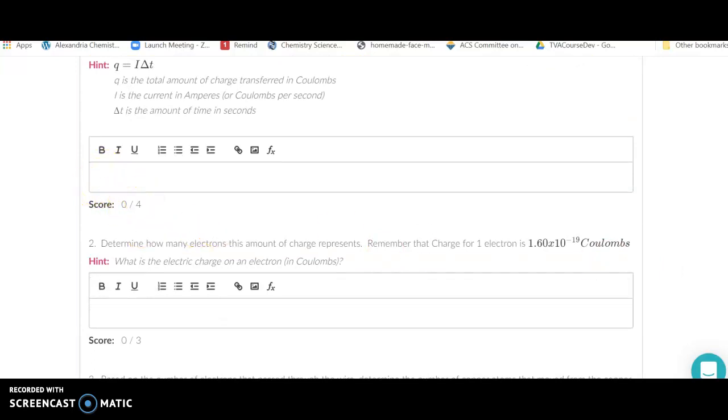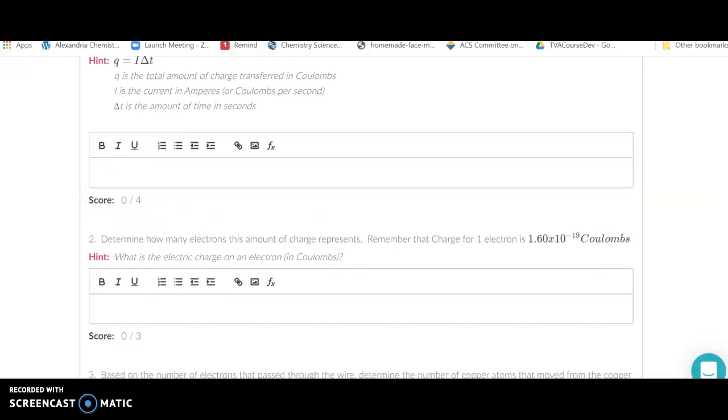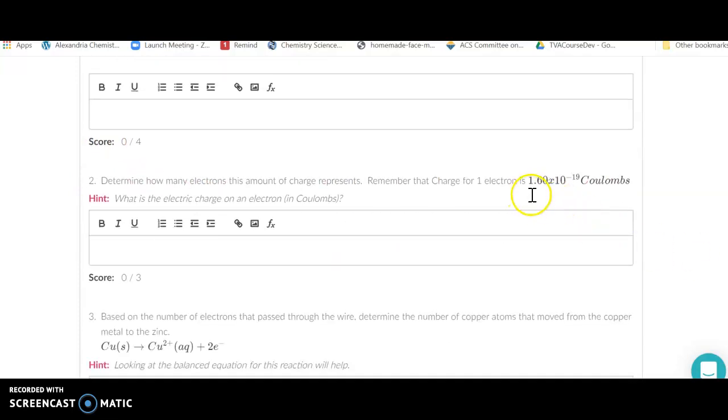Now we want to figure out how many electrons that involved. The charge for electrons is 1.60 times 10 to the minus 19 coulombs for every electron. So if we have coulombs as an answer here, we take our coulombs and divide by 1.6 times 10 to the minus 19 coulombs, put electrons on the top, and we get the number of electrons that were transferred.